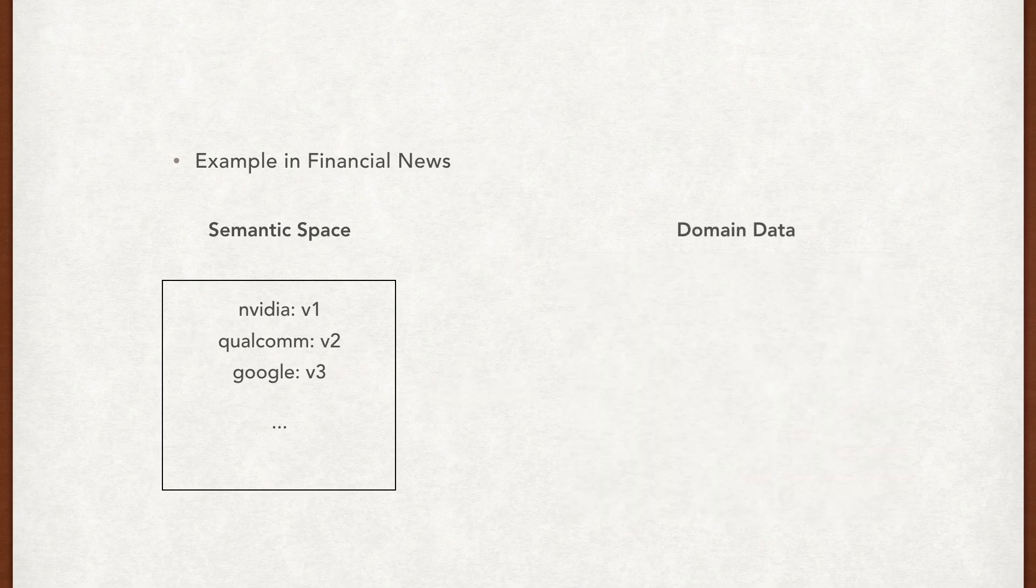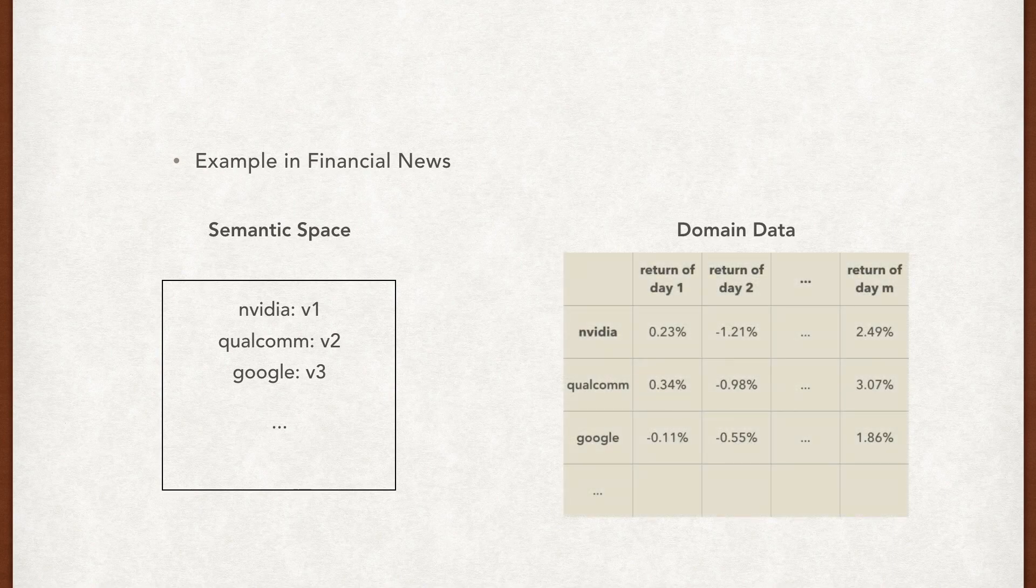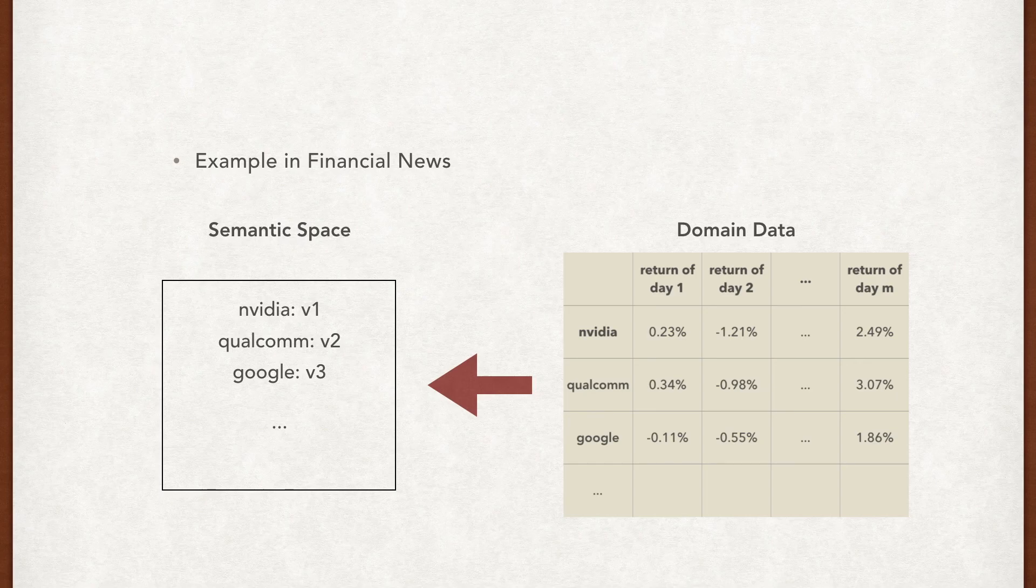In financial news analysis, there are also thousands of company names. Can we derive company name embeddings based on their stock trading information?